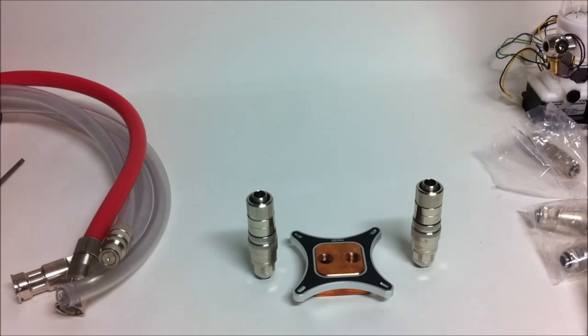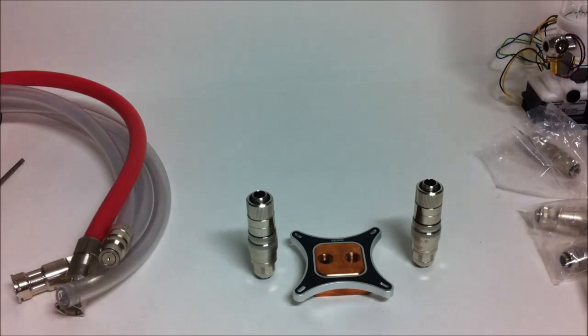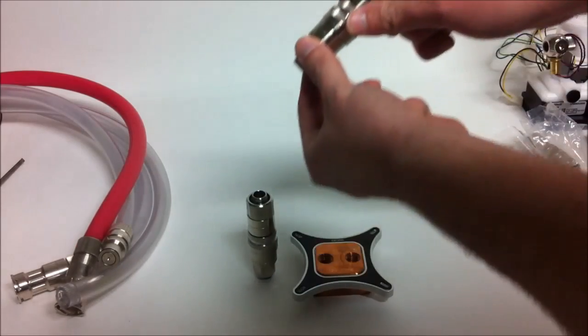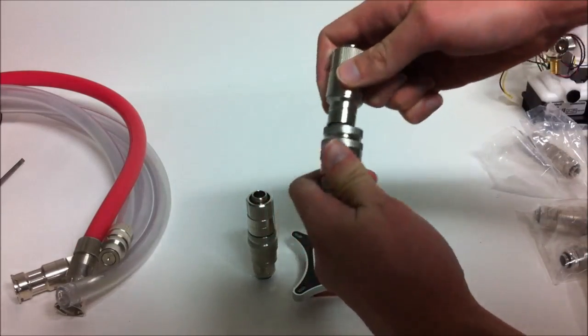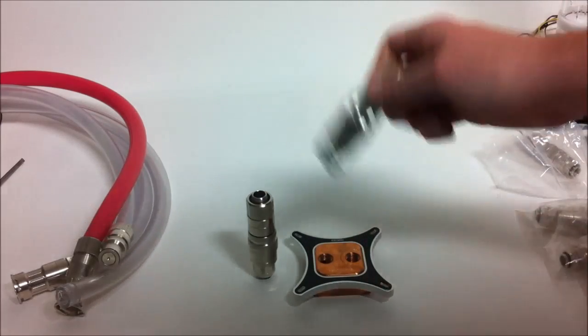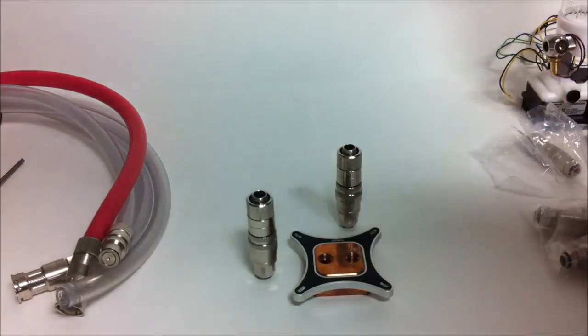Now, to go back to the other difference between the old quick disconnects and the new ones, is to do with how they attach. Like I said, on the new series, you pull the lock ring and it pops off. And you just push it back in. That is a lot nicer than the old version. So I'll get an old version for you to see.